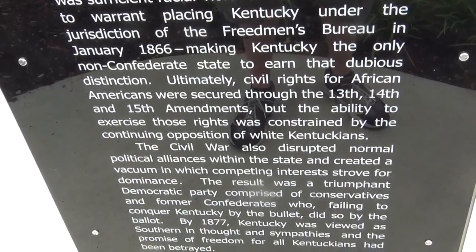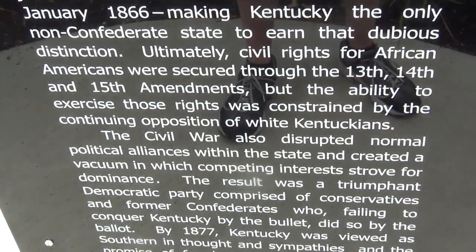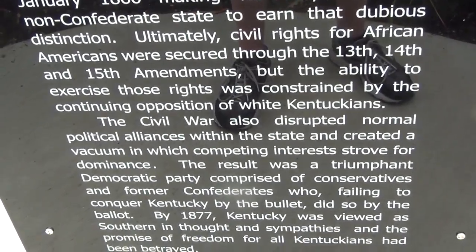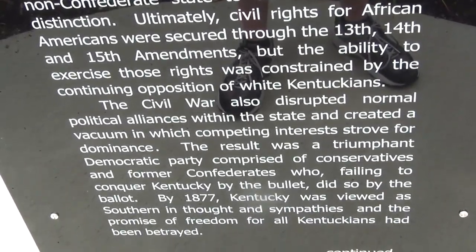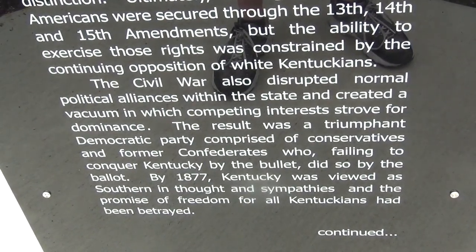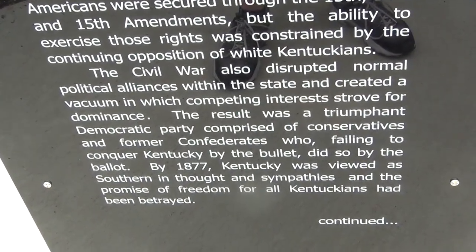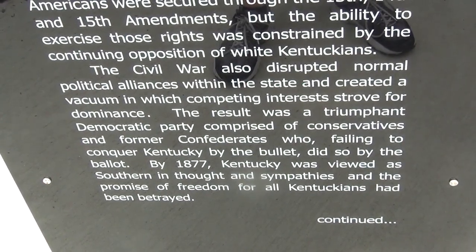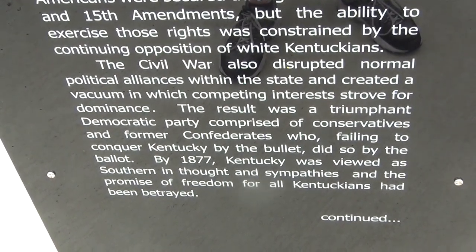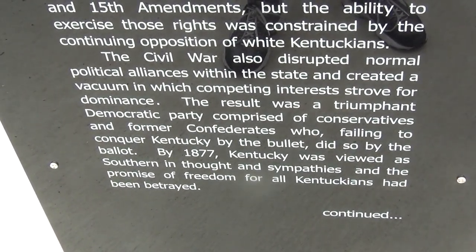Ultimately, civil rights for African Americans were secured through the 13th, 14th, and 15th Amendments, but the ability to exercise those rights was constrained by the continuing opposition of white Kentuckians. The Civil War also disrupted normal political alliances within the state and created a vacuum in which competing interests strove for dominance. The result was a triumphant Democratic Party comprised of conservatives and former Confederates who, failing to conquer Kentucky by the bullet, did so by the ballot.